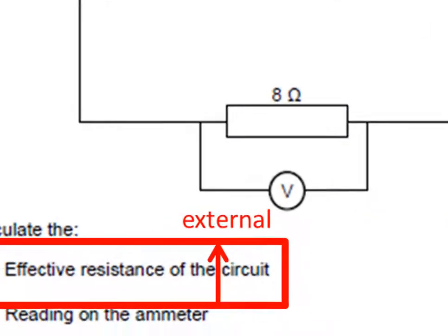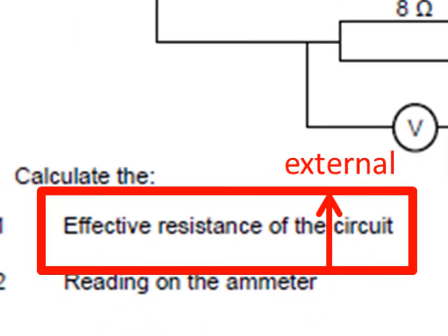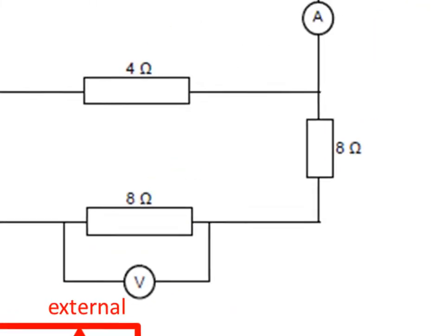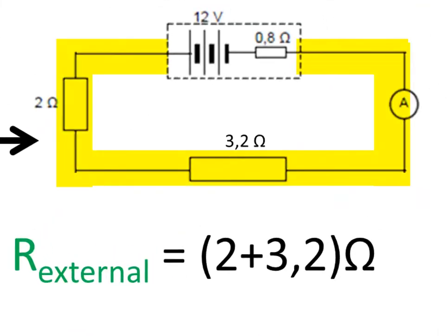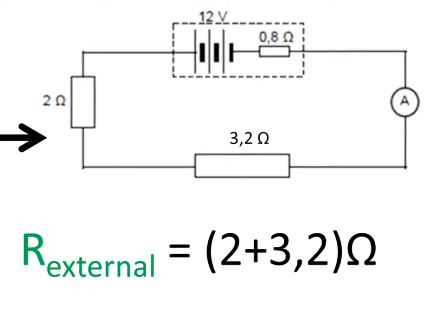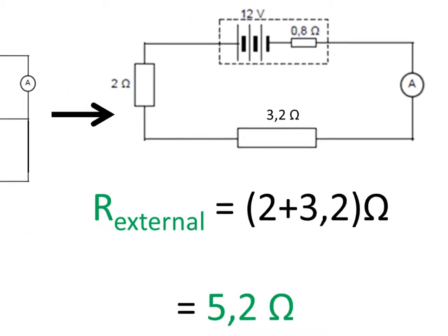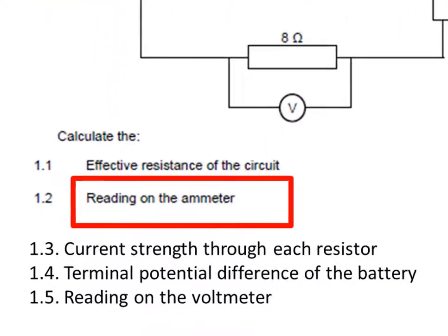If the question had rather said calculate the total resistance of the external circuit, then it would not include the battery's internal resistance. Then we would leave out 0.8 and the answer would be 2 plus 3.2 equals 5.2 ohms.